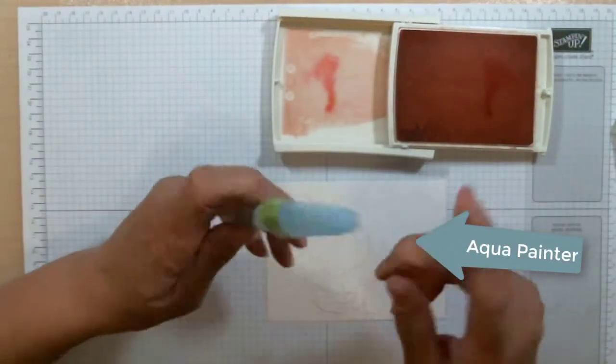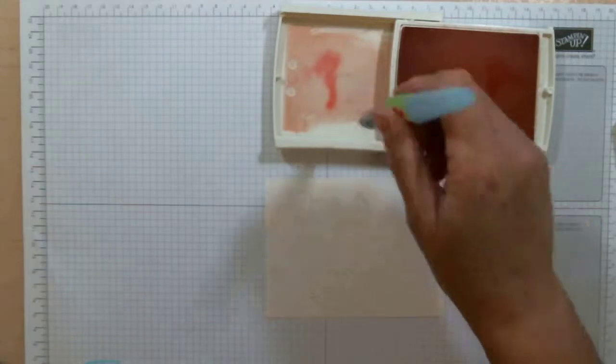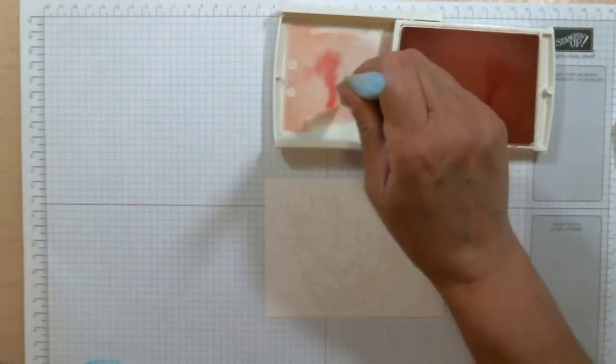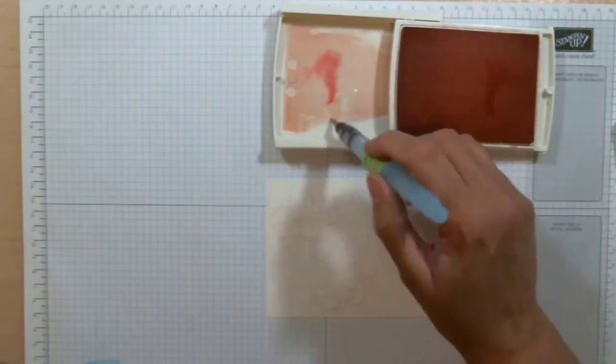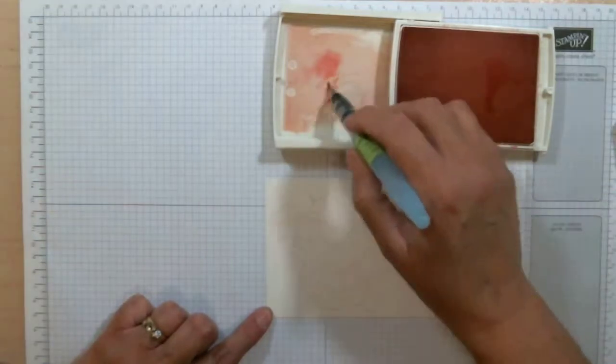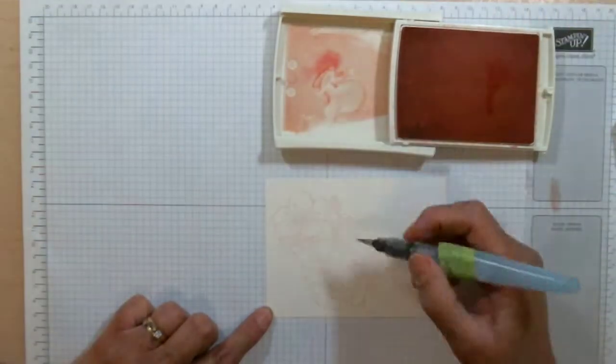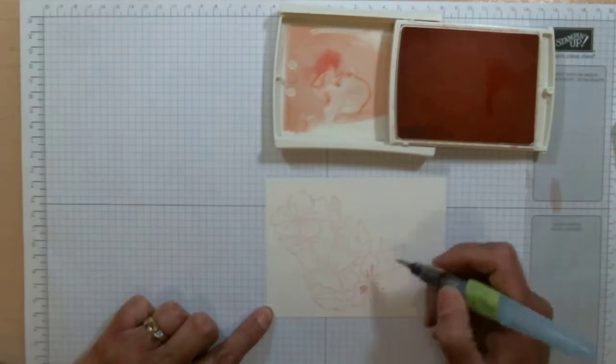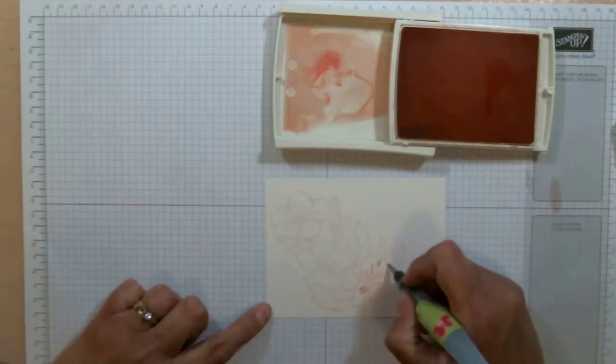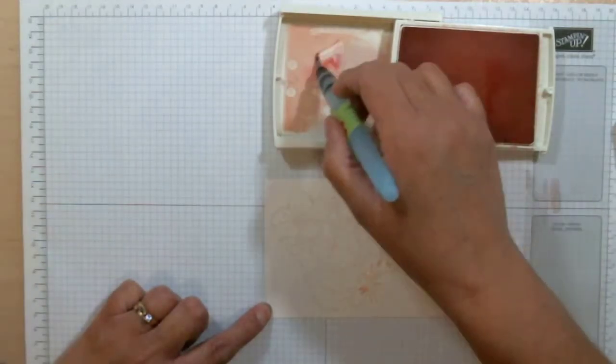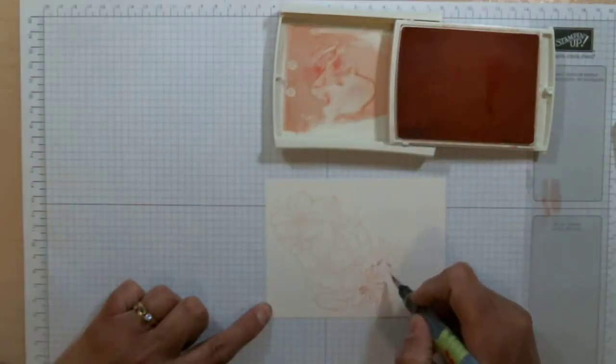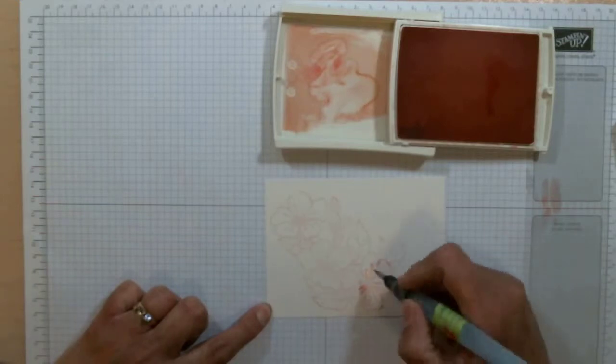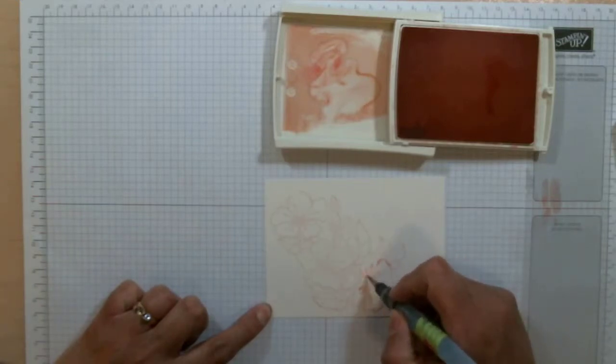I'll use an aqua painter filled with water and squeeze some water just to dilute the ink that's in the top of the case. I want to start off a little bit dark, so I'm just going to trace around the images of the flower, following the lines that are already stamped there. If I think it's too dark, I'll just add a little bit more water or brush off my aqua painter brush.